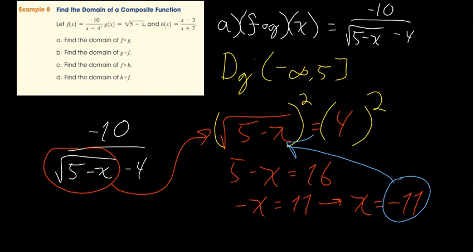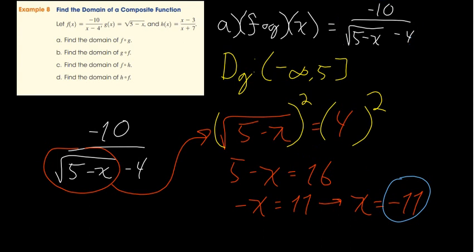So the domain of f of g is every number except negative 11 — intersected with the domain of g, which is negative infinity to 5. If you plug in negative 11, the denominator becomes the square root of 16 minus 4 which is zero, making the whole expression undefined.